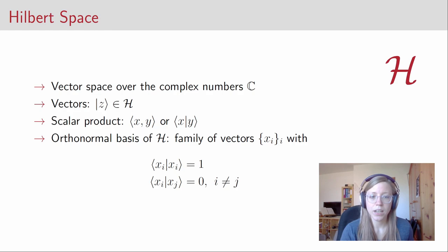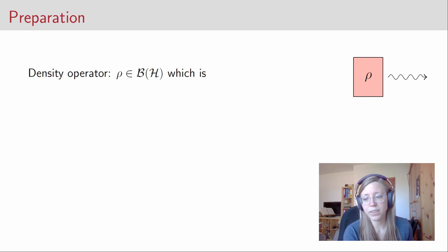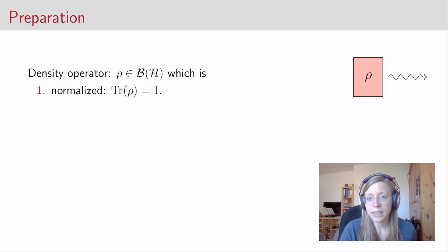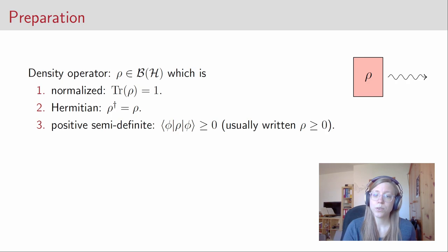Let's look at the first stage of the quantum protocol: the preparation stage, which is described by density operators. A density operator rho is an element of the operators over the Hilbert space H — a map from the Hilbert space into itself. It has to fulfill some properties: it has to be normalized, so the trace of the density operator has to be 1. It has to be a Hermitian operator, so its Hermitian conjugate is equal to the density operator itself.